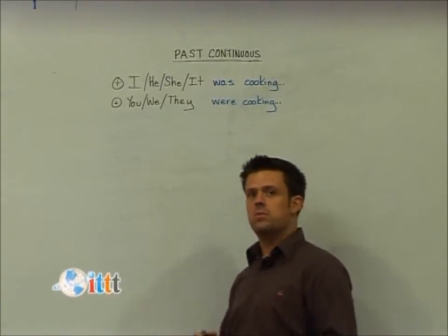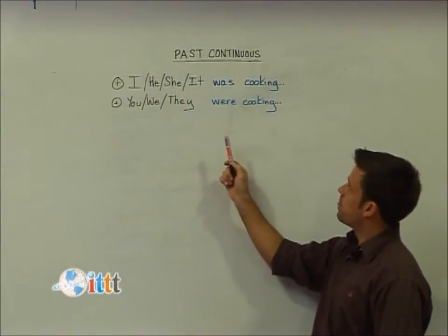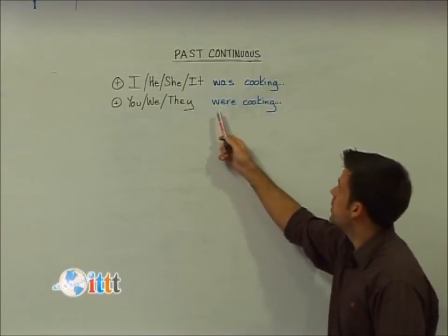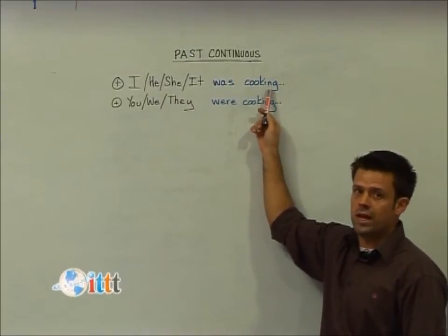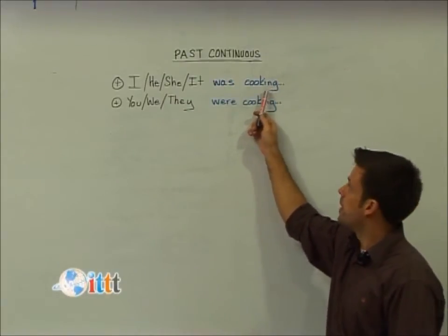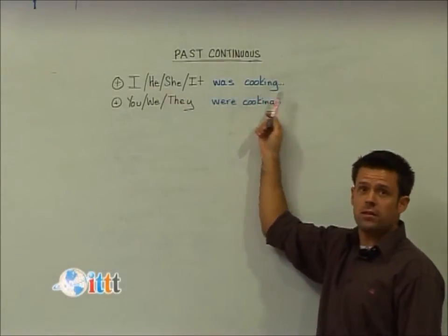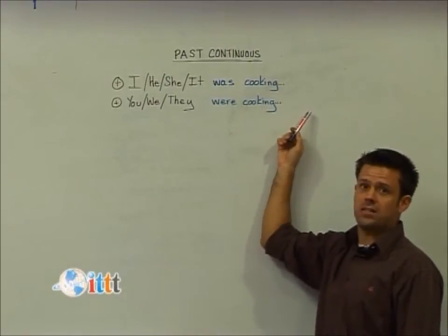We form this positive form by using our subjects, our helping verb or auxiliary verb to be, plus the verb plus ing form, also known as the present participle. So it results in sentences such as he was cooking last night or we were cooking last night.